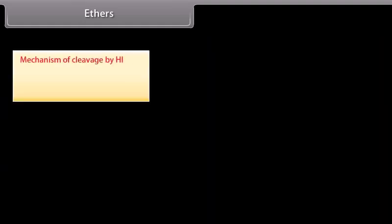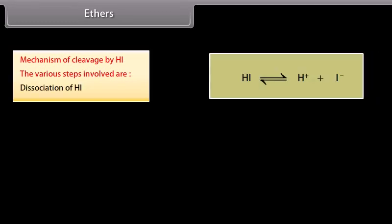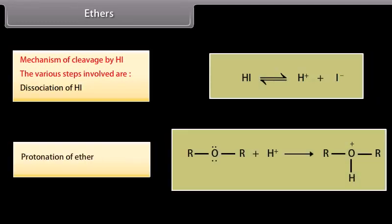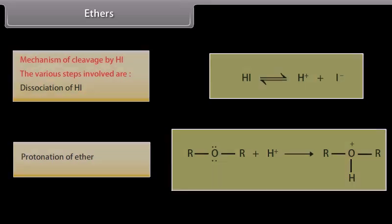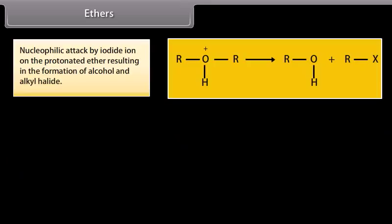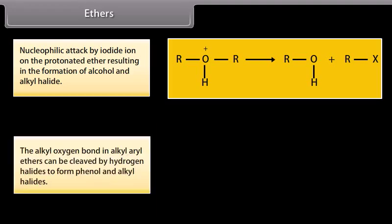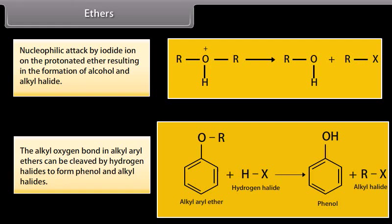Mechanism of cleavage by HI — the various steps involved are: dissociation of HI; protonation of ether; and nucleophilic attack by iodide ion on the protonated ether, resulting in the formation of alcohol and alkyl halide. The alkyl-oxygen bond in alkyl aryl ethers can be cleaved by hydrogen halides to form phenol and alkyl halides.